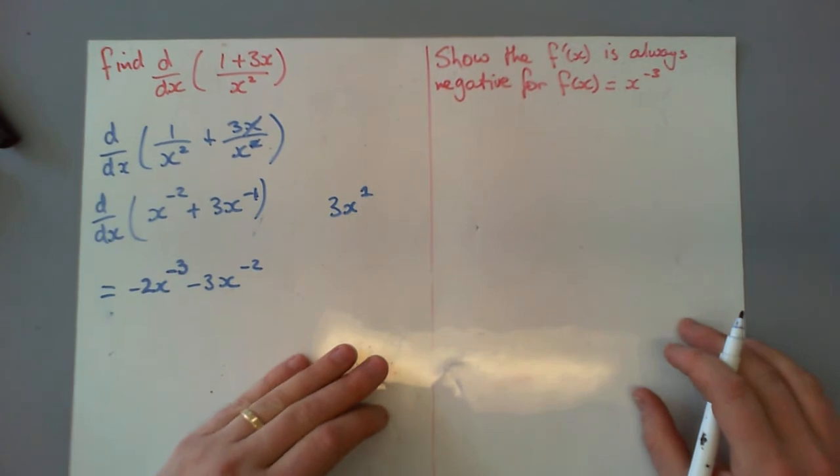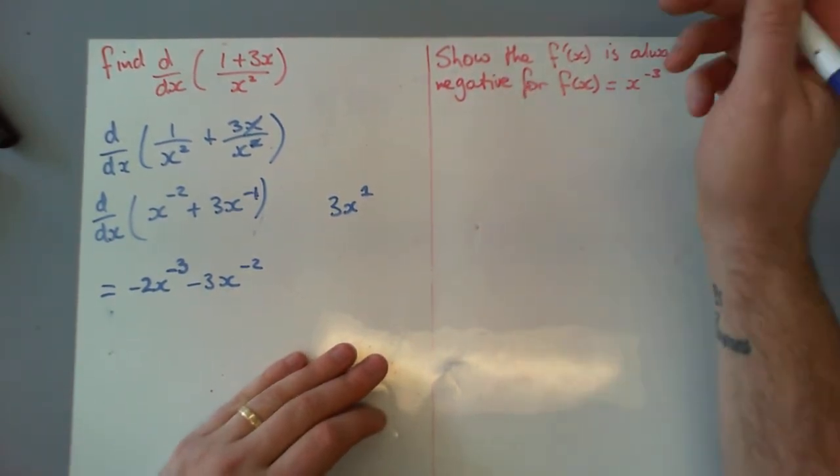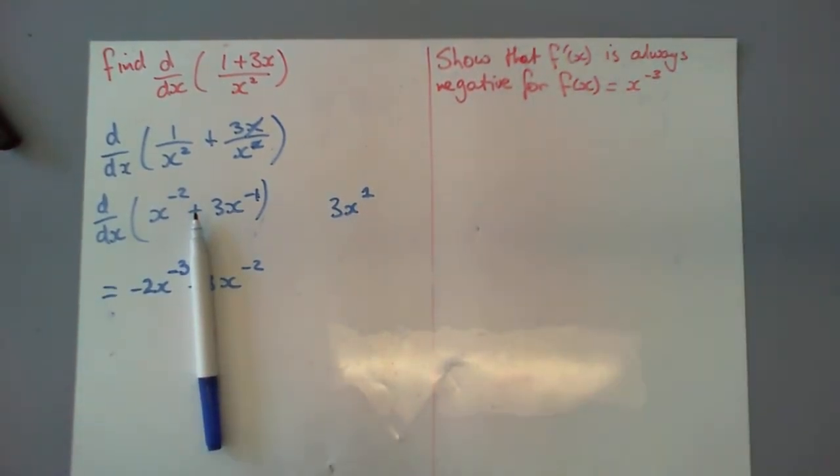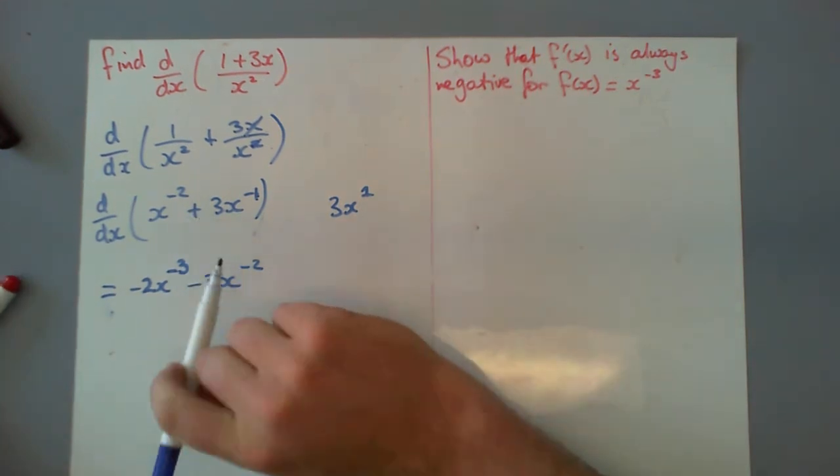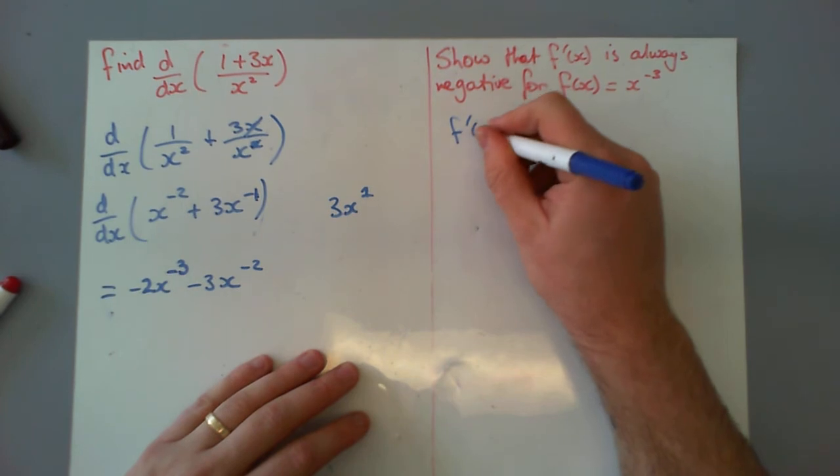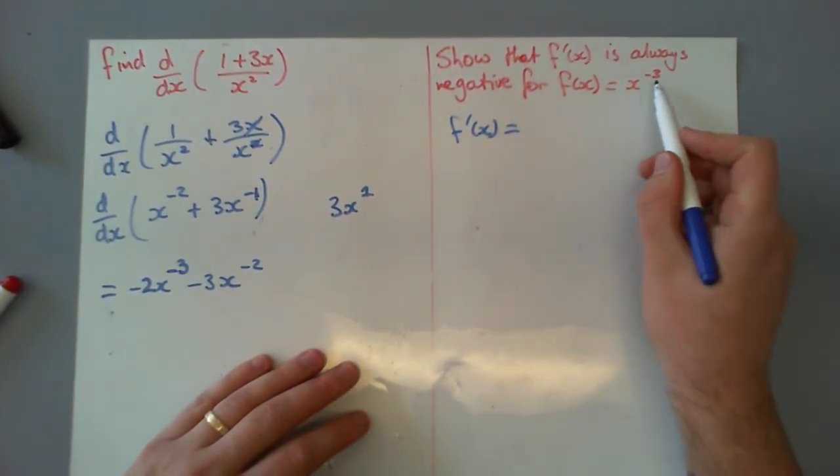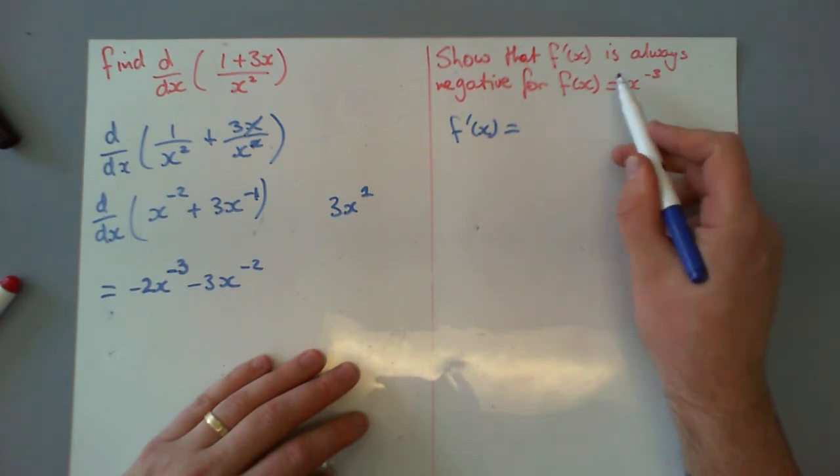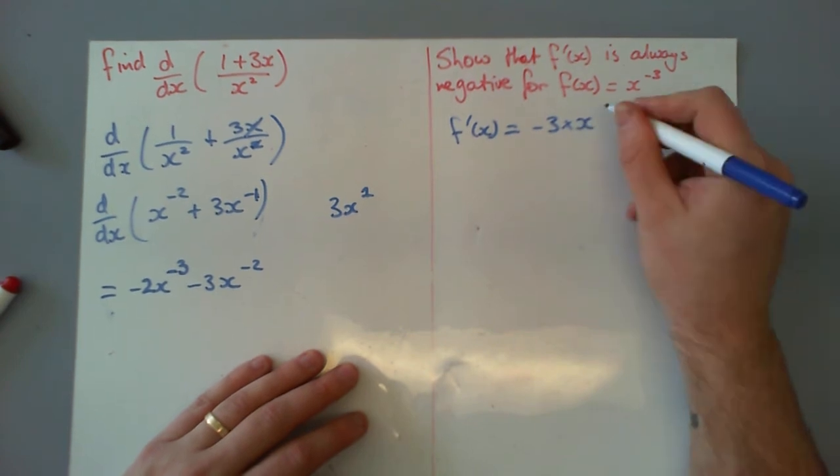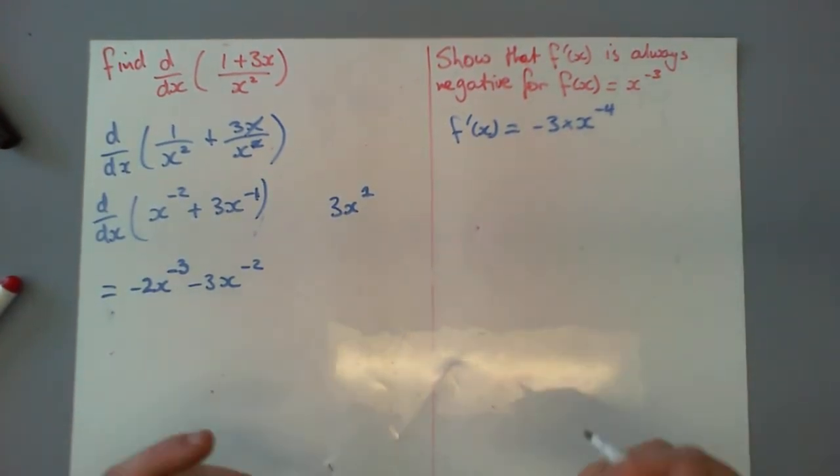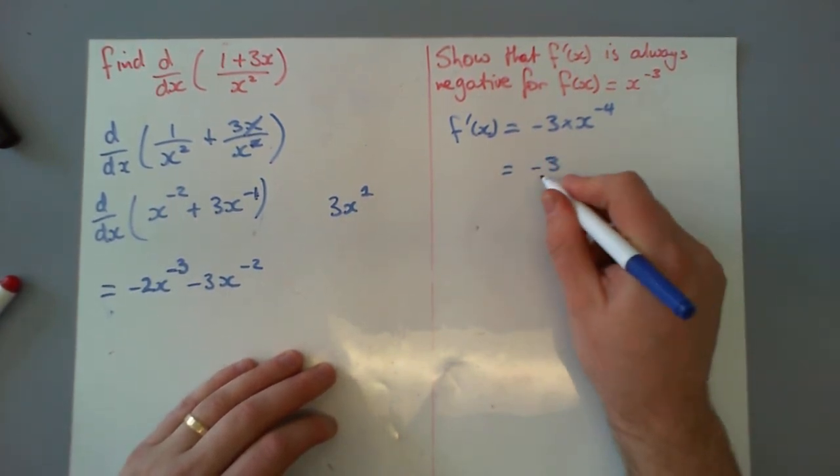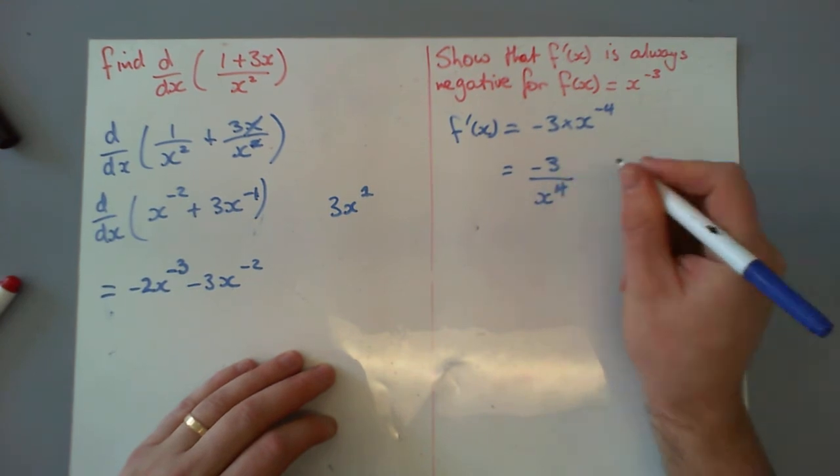We've got one more to look at, which is show that f dash of x is always negative for f of x equals x cubed. So what we first need to do is go, okay, well, what's our derivative? f dash of x. So we're going to reduce our, oh, we're going to bring our power down. Negative 3 times x to the negative 4. Now we can think about writing this a little bit of a different way with a positive power, so we can sort of think about what's going on. Negative 3 on x to the power of 4.